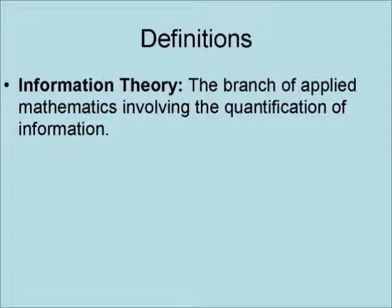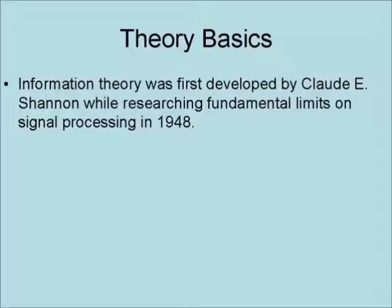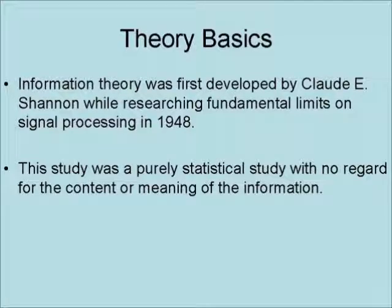Information theory is the branch of applied mathematics involving the quantification of information. Information is a message that consists of an ordered sequence of symbols, or the meaning that can be interpreted from it. Information theory was first developed by Claude E. Shannon while researching the fundamental limits on signal processing in 1948. This study was a purely statistical study with no regard for the content or meaning of the information.